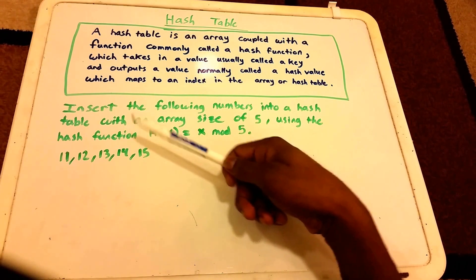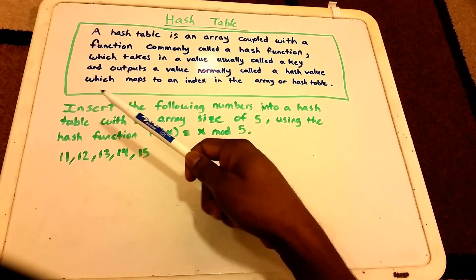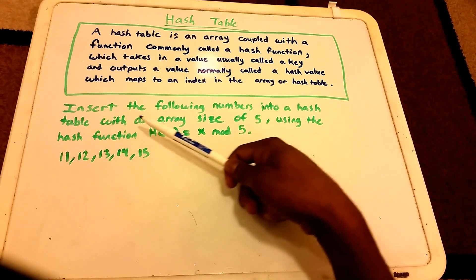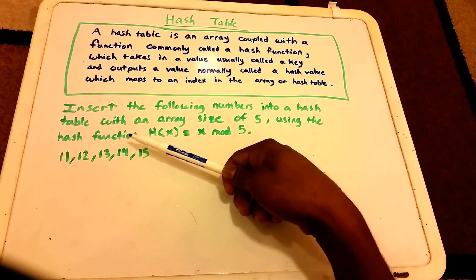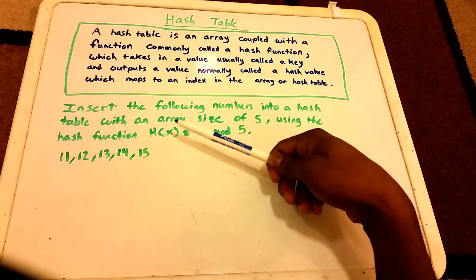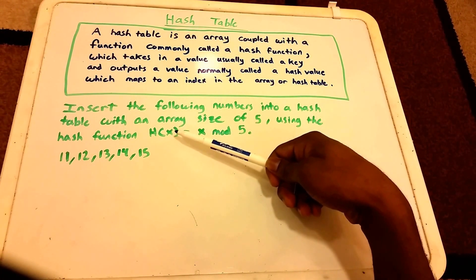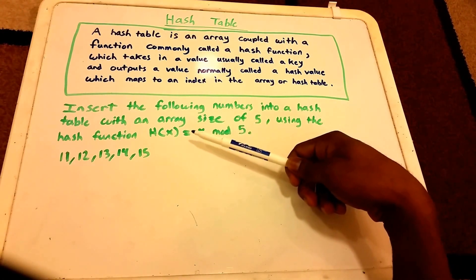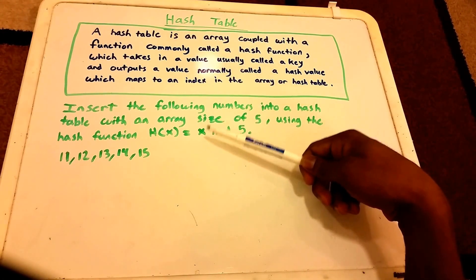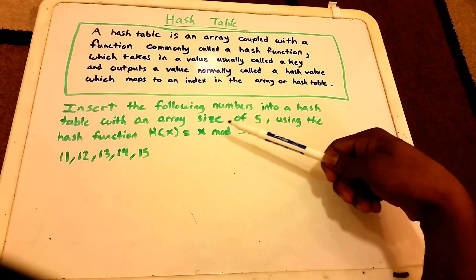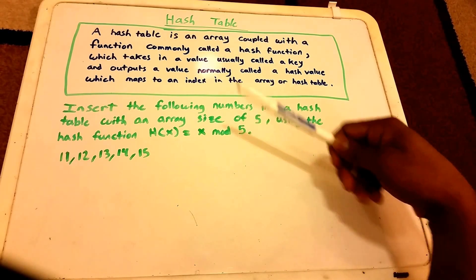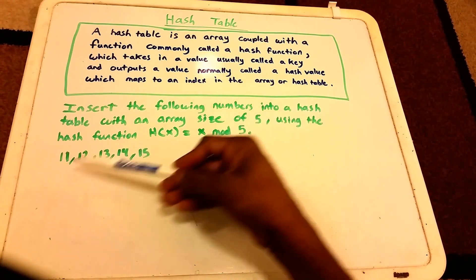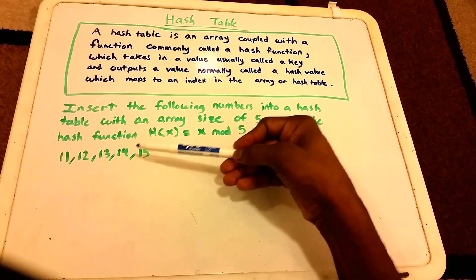Here we have a problem. It wants us to insert the following numbers into a hash table with an array size of 5, using the hash function H(x) = x mod 5. Below here we have our input numbers: 11, 12, 13, 14, and 15.